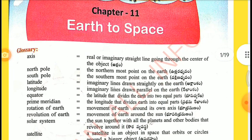Glossary. Axis: a real or imaginary straight line going through the center of the object. North Pole: the northernmost point on the earth. South Pole: the southernmost point on the earth.